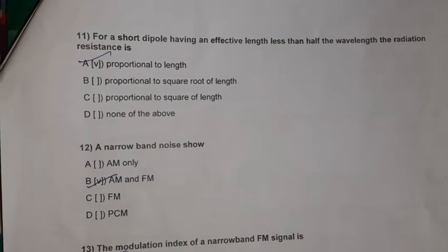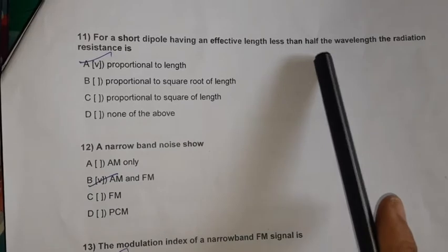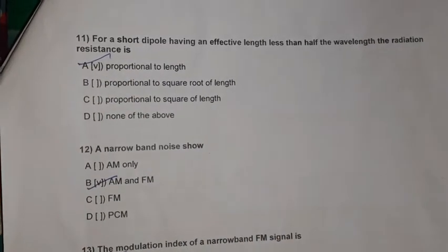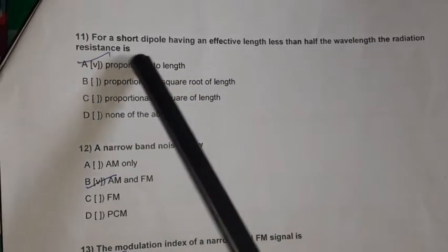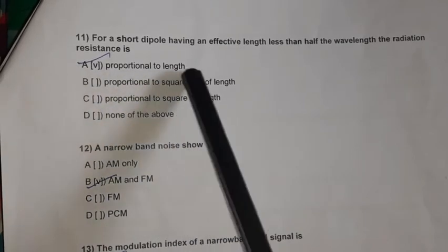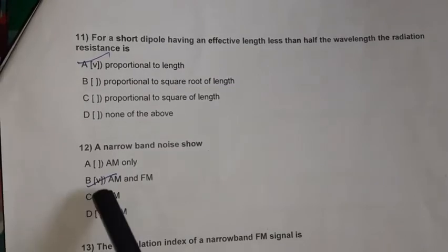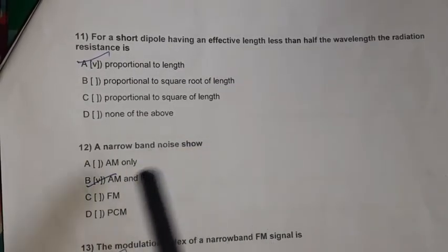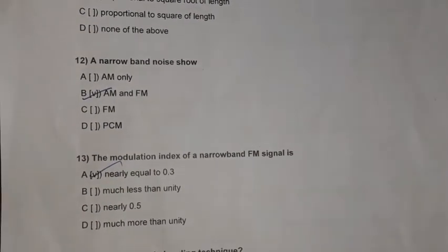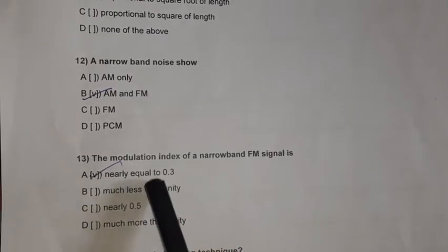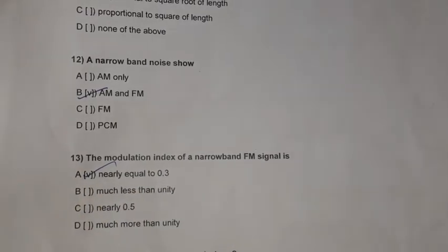Question 11: For a short dipole having an effective length less than half the wavelength, radiation resistance is proportional to length. Question 12: A narrowband noise shows AM and FM. Question 13: The modulation index of a narrowband FM signal is nearly equal to 0.3.